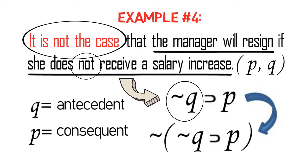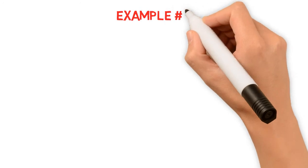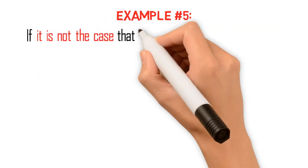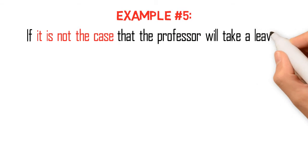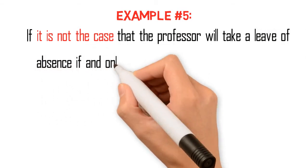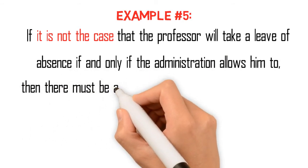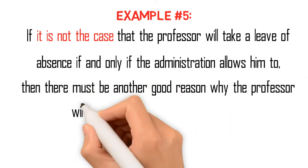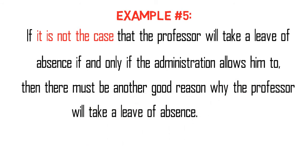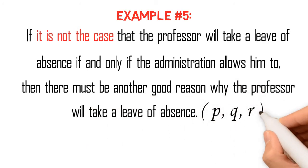Well, this is a simple example of a proposition that uses the negation sign 'it is not the case.' Now let's symbolize another example that is a bit complex. This is our fifth example: If it is not the case that the professor will take a leave of absence, if and only if the administration allows him to, then there must be another good reason why the professor will take a leave of absence. P, Q, R.